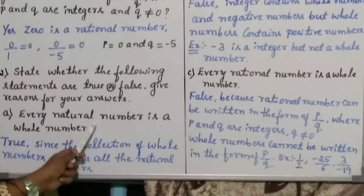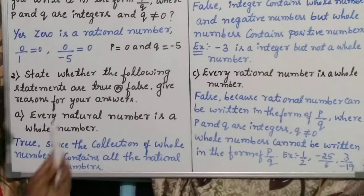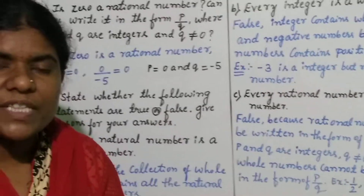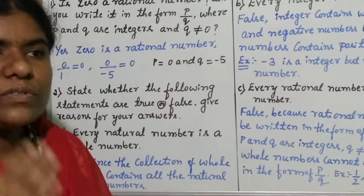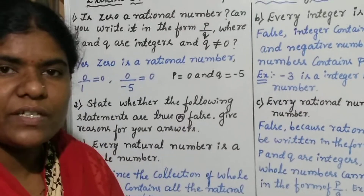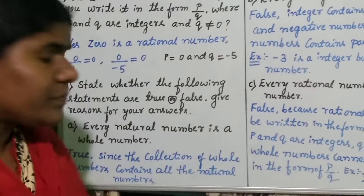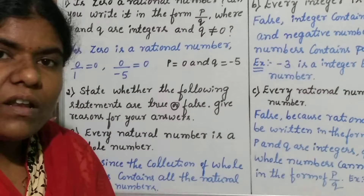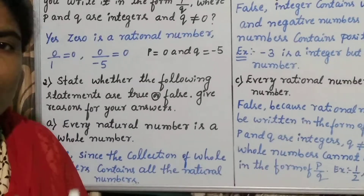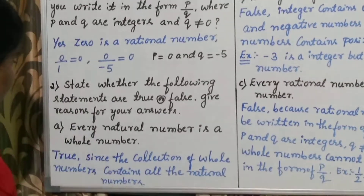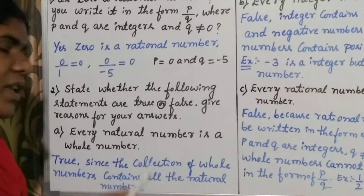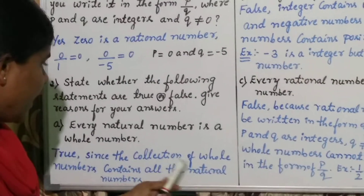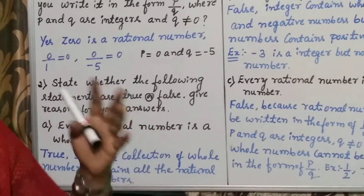The first statement is: every natural number is a whole number. Natural numbers are all positive numbers excluding 0, like 1, 2, 3, 4, and so on up to infinity. Whole numbers include 0 and all positive numbers. Based on that concept, every natural number is a whole number — the statement is TRUE. The reason: the collection of whole numbers contains all the natural numbers.